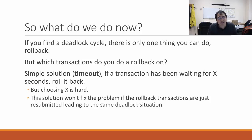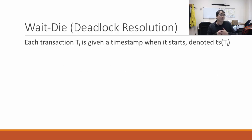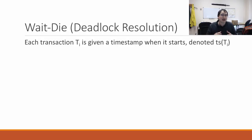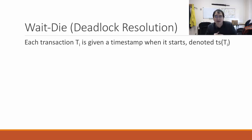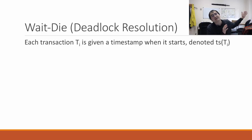There are two strategies that work better than timeout, though they're a bit harder to implement. The first is called wait-die. Each transaction is given a timestamp when it starts — when you run the BEGIN TRANSACTION statement — denoted as TS(Ti). Timestamps that are smaller are older; think of the timestamp as the number of milliseconds since 1970. So a smaller timestamp means an older transaction.